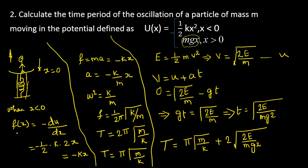We know that potential energy differentiated gives force, and force integrated gives potential energy. So force F(x) = −dU/dx. Differentiating (1/2)kx², the 2 and 2 cancel, giving −kx. So F = −kx, and since F = ma, we get acceleration = −(k/m)·x.